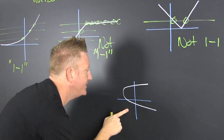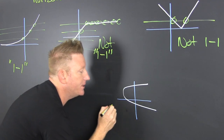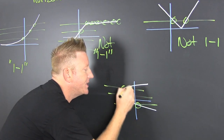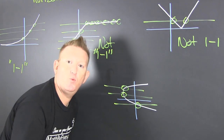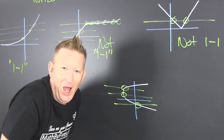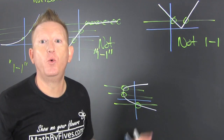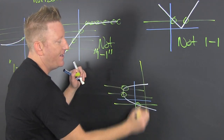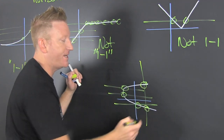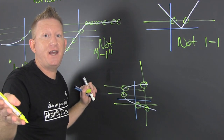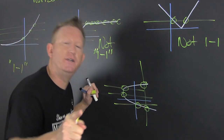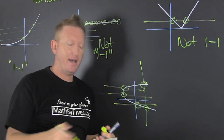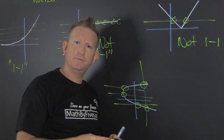A little sideways parabola — it only touches at one spot, one spot, one spot. Is it one-to-one? No. Wait, curveball — why? Because it doesn't pass the vertical line test. It's not a function. In the definition, it must first be a function before it can be a one-to-one function. And I'm just out here trying to function.